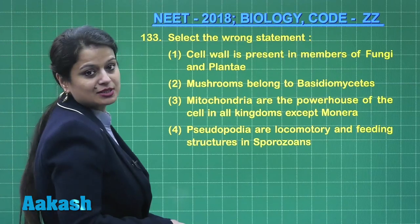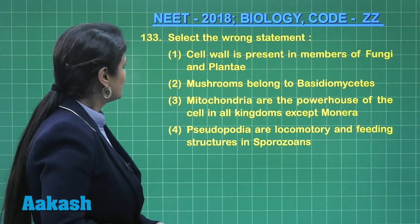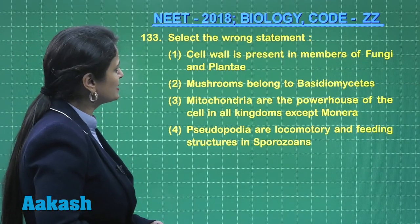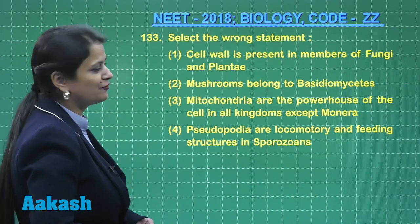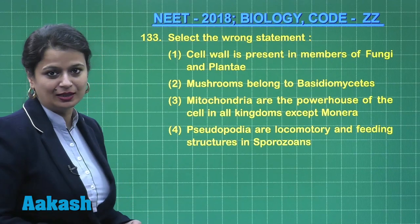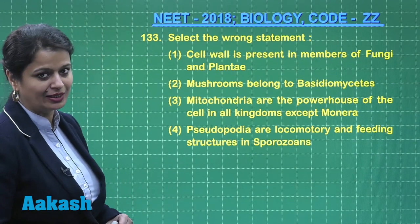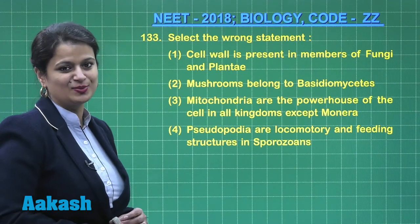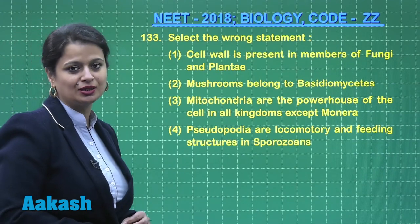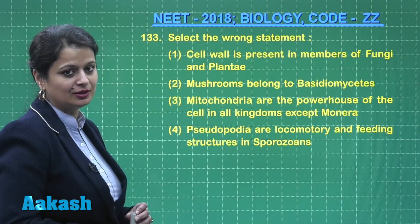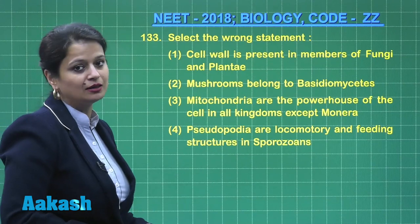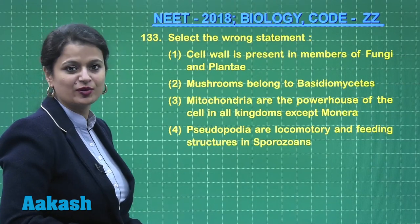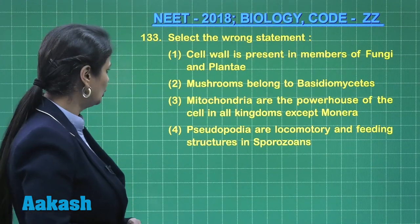Select the wrong statement. Cell wall is present in members of fungi and plantae — that's right. In fungi, cell wall is made up of chitin. And in plantae, one main component which is present is cellulose.